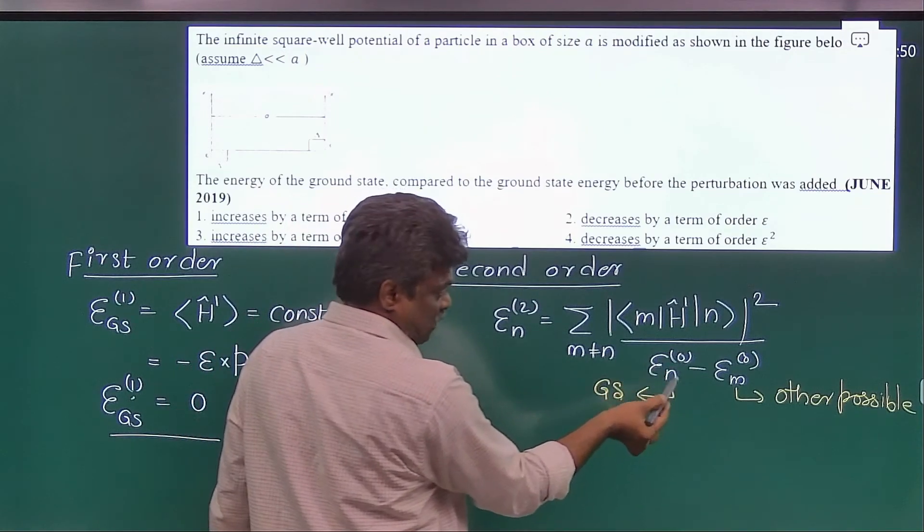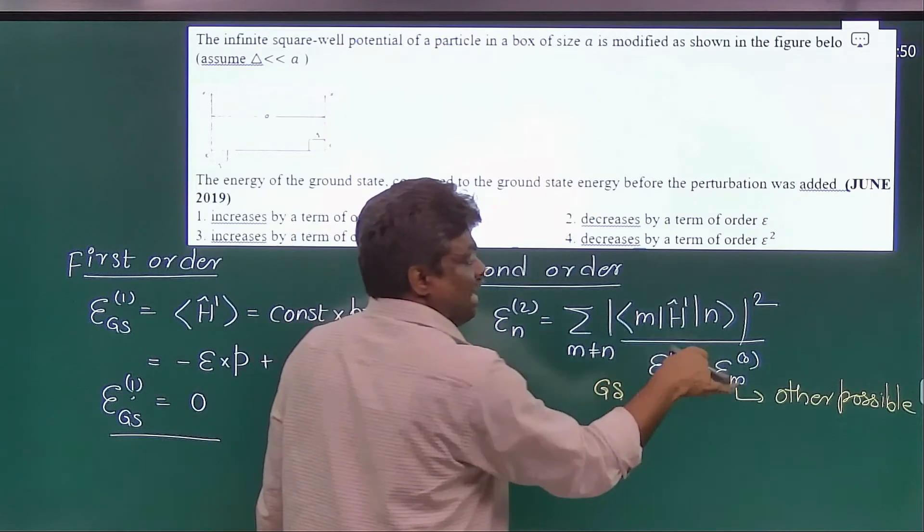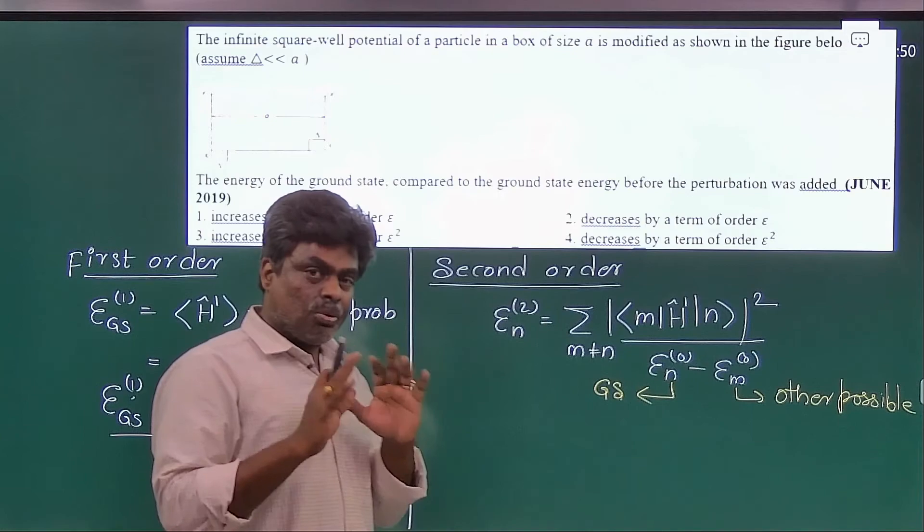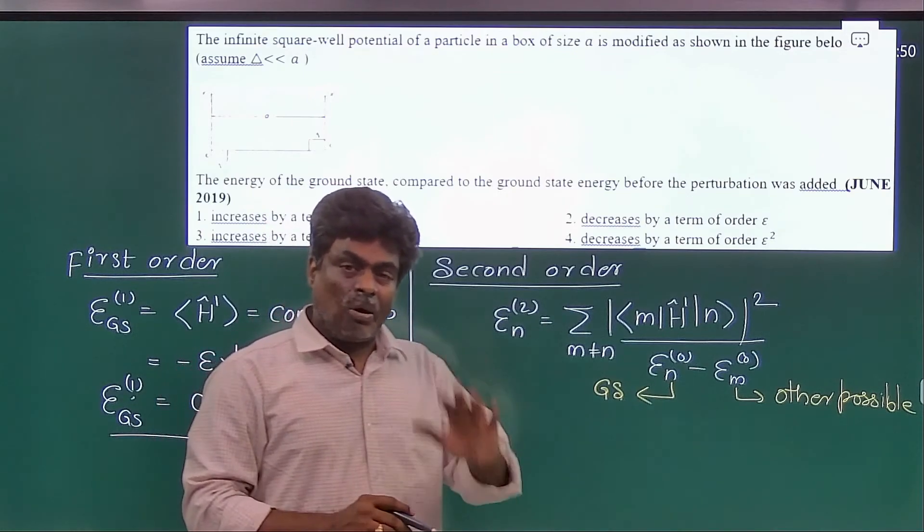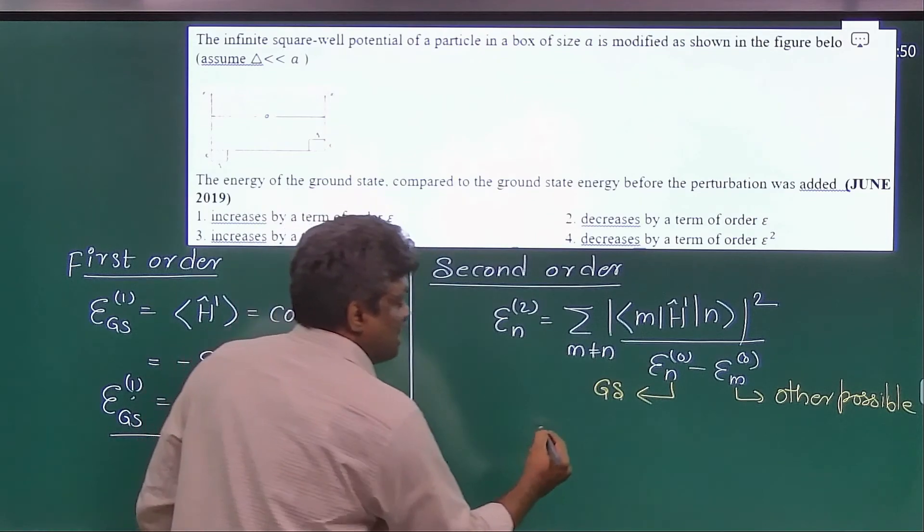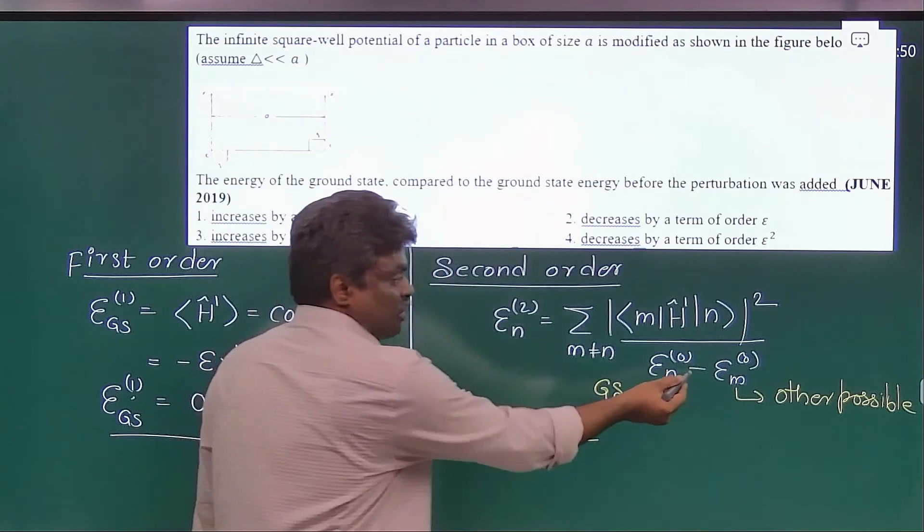This is the ground state. So in the denominator we have the ground state energy minus other state energies - unperturbed energies. So you know one thing: the ground state energy is always less than the other state energies. So always here we are getting a minus sign, because of this denominator.